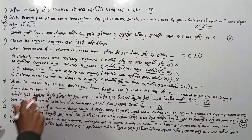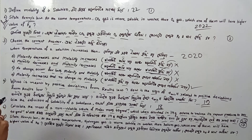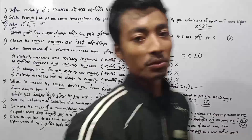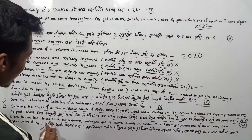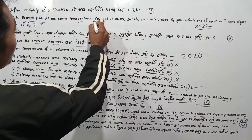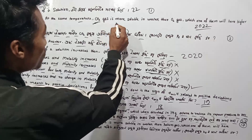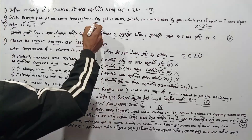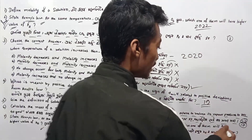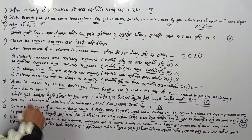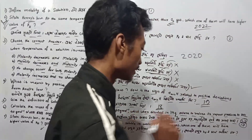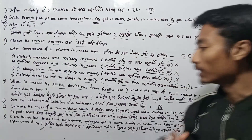Next question: At the same temperature, hydrogen gas is more soluble in water than helium gas. Similarly, carbon dioxide gas is more soluble in water than oxygen gas. Which one of them — carbon dioxide and oxygen, or hydrogen and helium — will have a higher value of KH? As per Henry's law, hydrogen gas has the higher KH value.